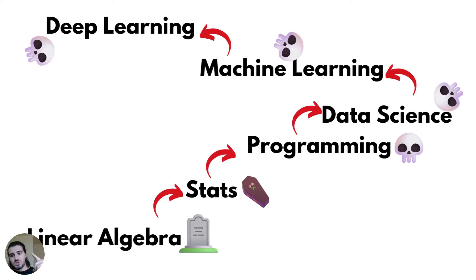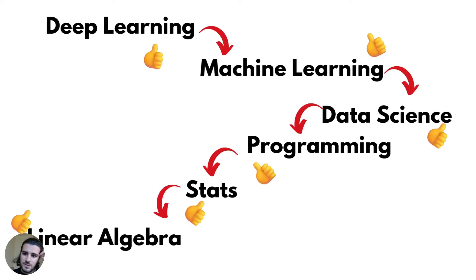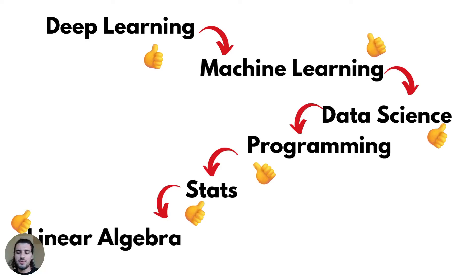A bottom-up approach to deep learning is a bit flawed, since even researchers in the field aren't necessarily applying this first-principles kind of logic. So the roadmap to learn deep learning that I've seen works best for students is actually to flip it — to start at the top and then make your way down as needed. This more closely mimics how the deep learning field itself is operating.